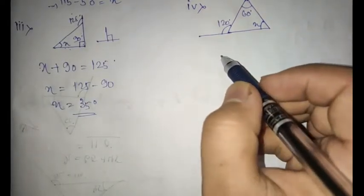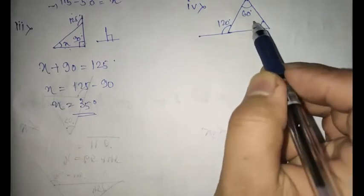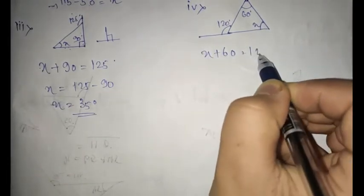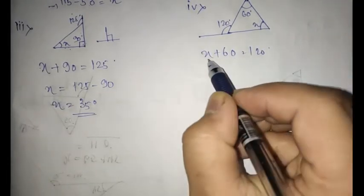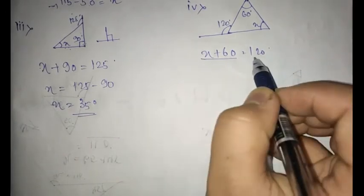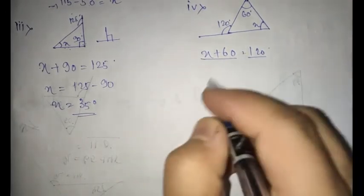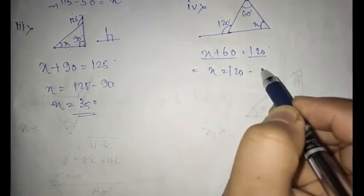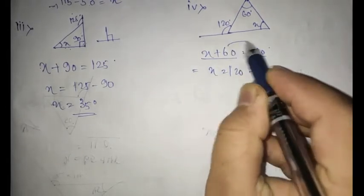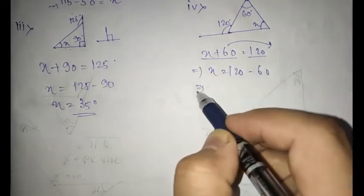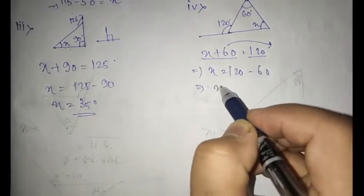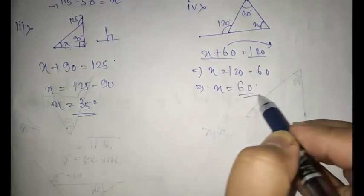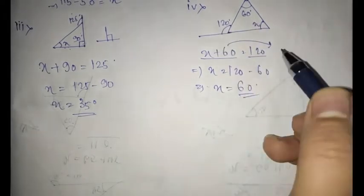Here we have the next question, number four. Its interior is given: x plus 60 is equal to 120. This is the formula — sum of the interior opposite angles is equal to the exterior angle of a triangle. So x is equal to 120 minus 60, because this 60 will come here and it will become minus 60, transposing the value — the sign will get changed. So it is 60 degrees. So 60 plus 60 will make 120.